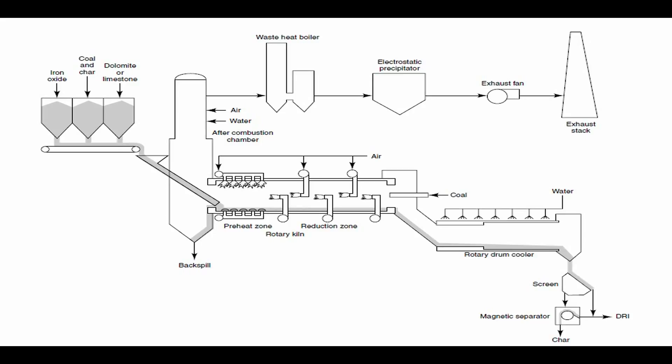The temperature profile in the kiln is controlled by radial air ports in the preheat zone and axial air ports in the reduction zone. Part of the coal is injected through the central line of the kiln at the discharge end.